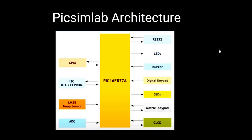This is the basic architecture of PixSim Lab. It includes GPIO pins for input and output, I2C converters, temperature sensors, and A2D converters (analog to digital converters). It also has RTC modules (real-time clock modules), LED interfaces, buzzers, a digital keypad for toggling various actions and commands, a matrix keypad, and an LCD display — all connected directly to the PIC microcontroller.